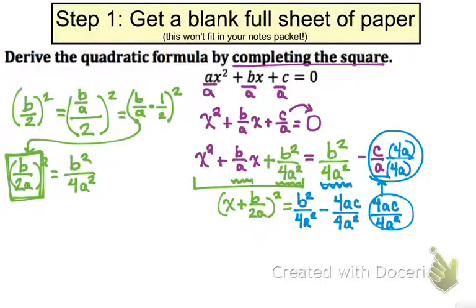Minus my new one over here, 4ac/4a². So I'm going to condense this down a little bit over on the right. This is actually just (b² - 4ac)/4a², the denominators are the same. And then on the left-hand side I'm going to leave it as (x + b/2a)².